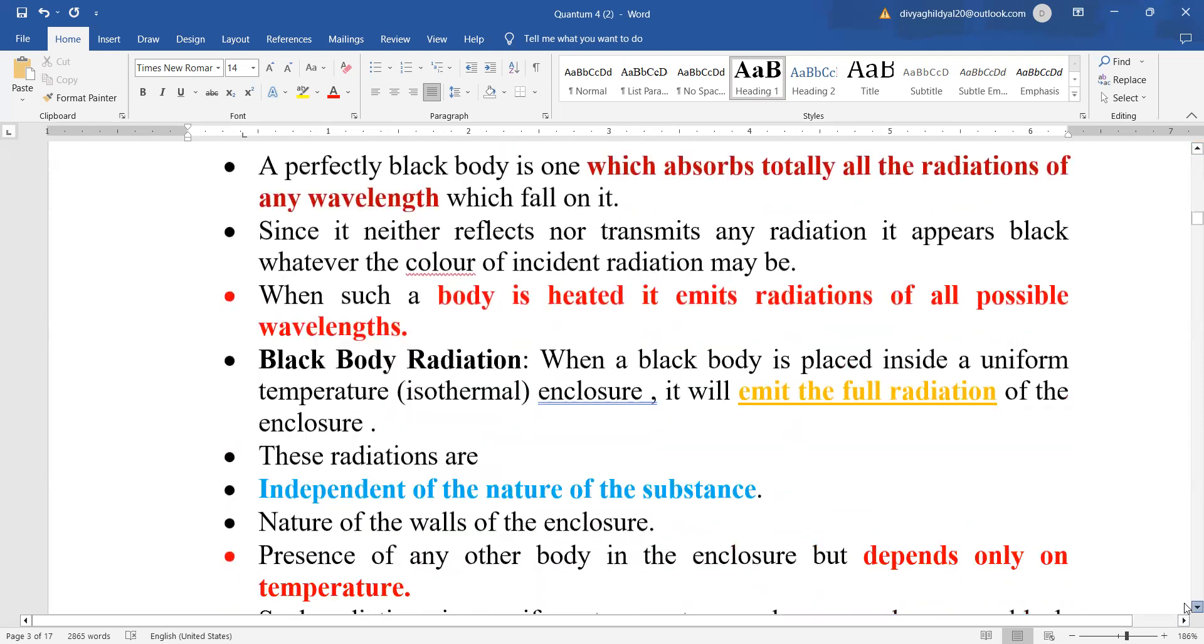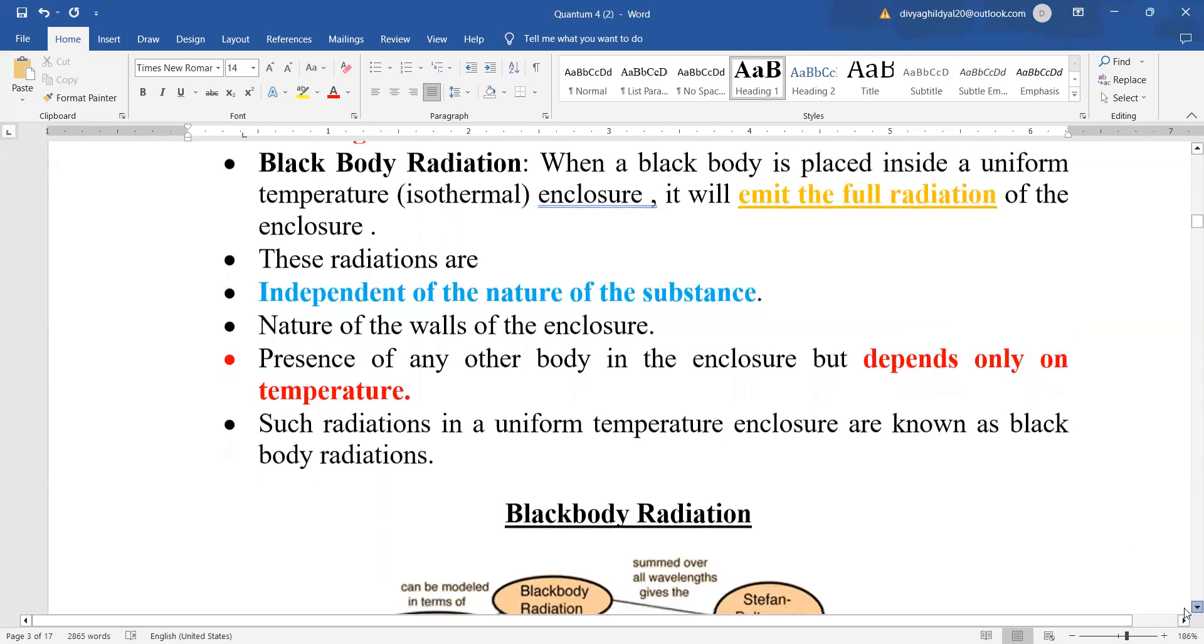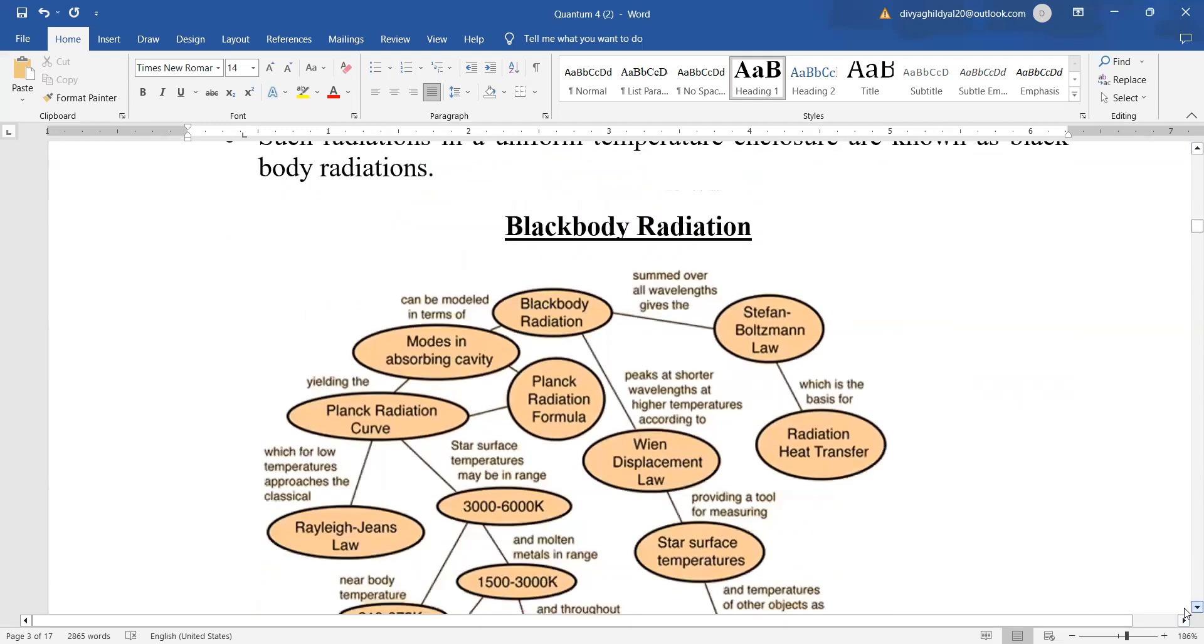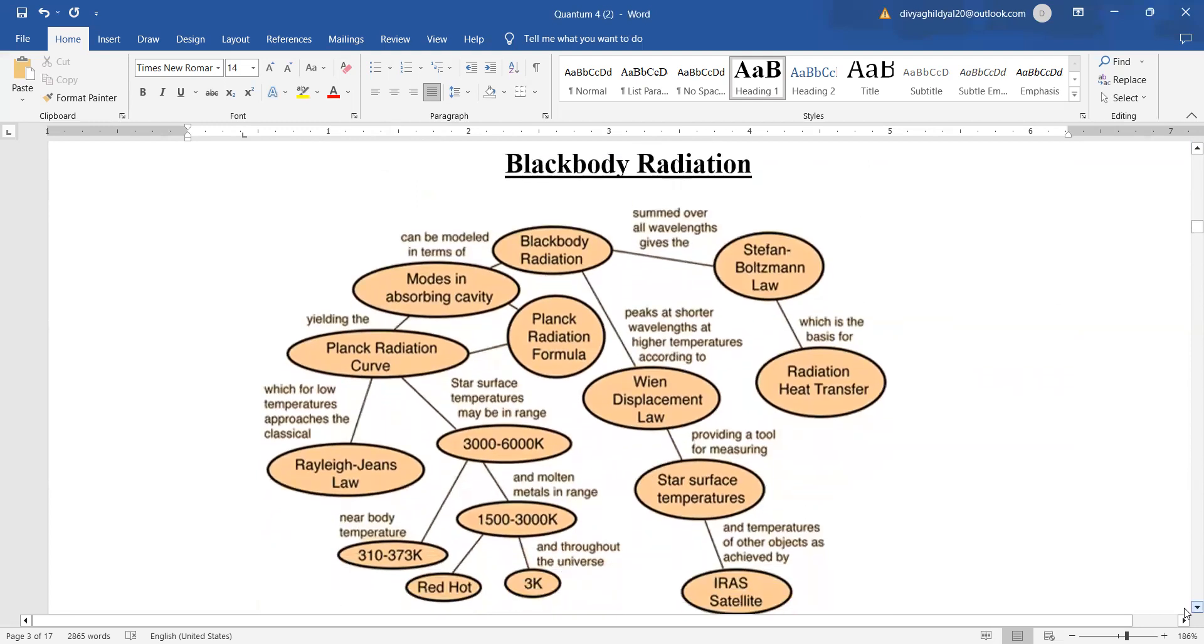A few more important points: these radiations which are emitted are independent of the nature of substance, independent of the nature of the walls of the enclosure, and depend on temperature. Radiations in a uniform temperature enclosure are known as black body radiations. In quantum statistics, you will study these laws in detail.